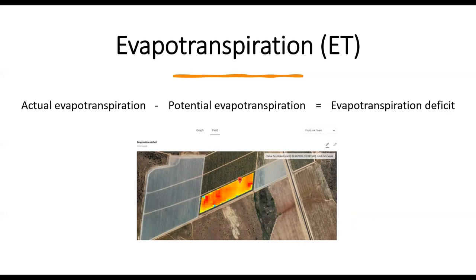This means no stress and optimal water availability. The difference between the actual and potential is the evapotranspiration deficit. The deficit is the amount of millimeters the crop could have additionally liked in order to have no stress. The image shows for the clicked point 4.44 millimeters per week of evapotranspiration deficit — this is just an extra layer of information. For many crops, a bit of stress is a good thing and supports growth of fruits; for others, it is critical.